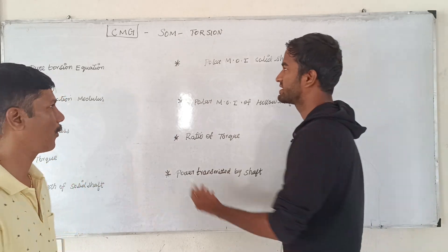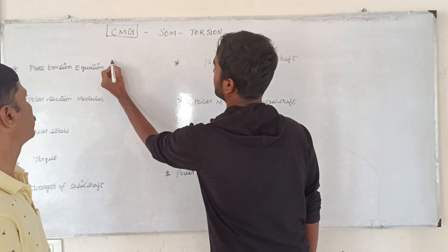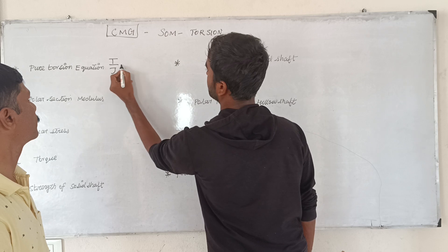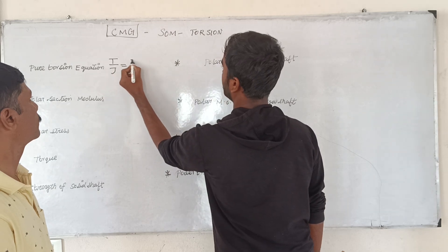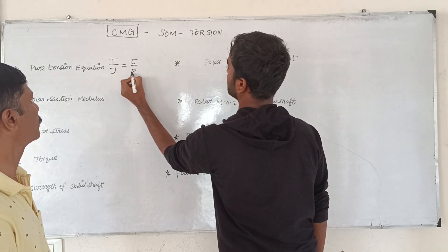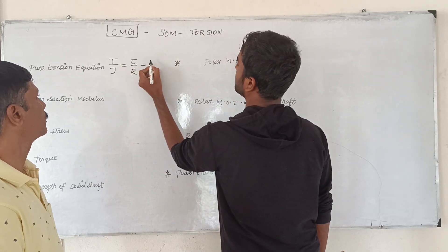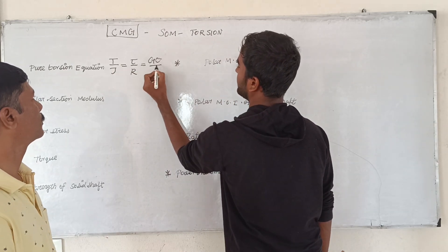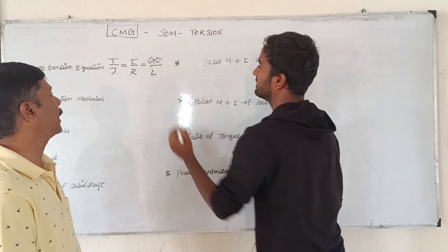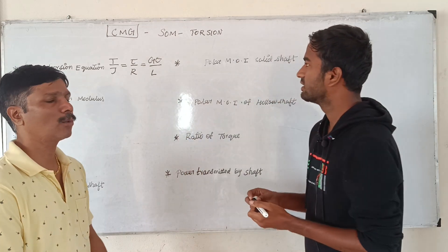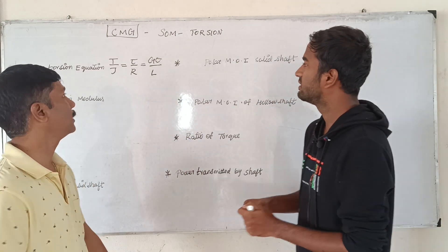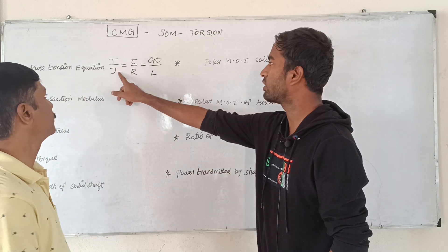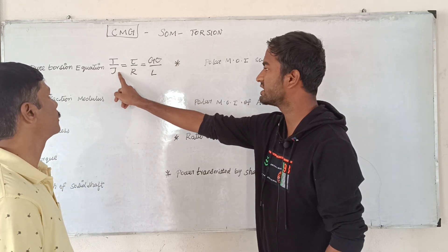The question is: T by J is equal to Tau by R, equal to G Theta by L. The variables are: T, J, T, R, G, N, Theta, L — and J is the Polar Momentum.